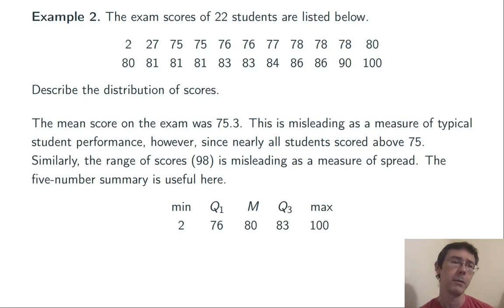So let's compute the five-number summary. Of course, the min is 2 and the max is 100. It's an even data set. There's an even number of values, so we take the two in the middle and split the difference. Here they're both 80, so the median is 80. And then the medians of the top half and bottom half are going to be 76 and 83.